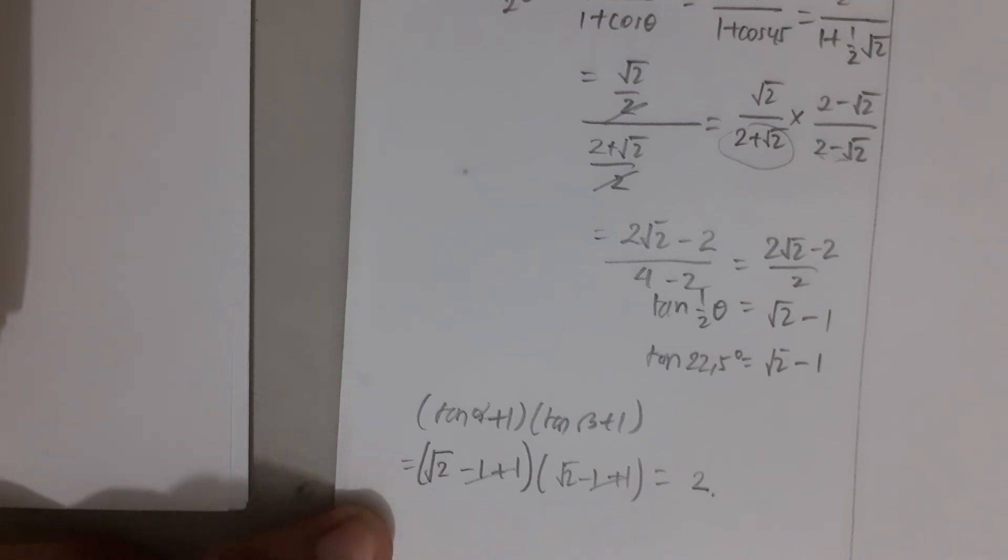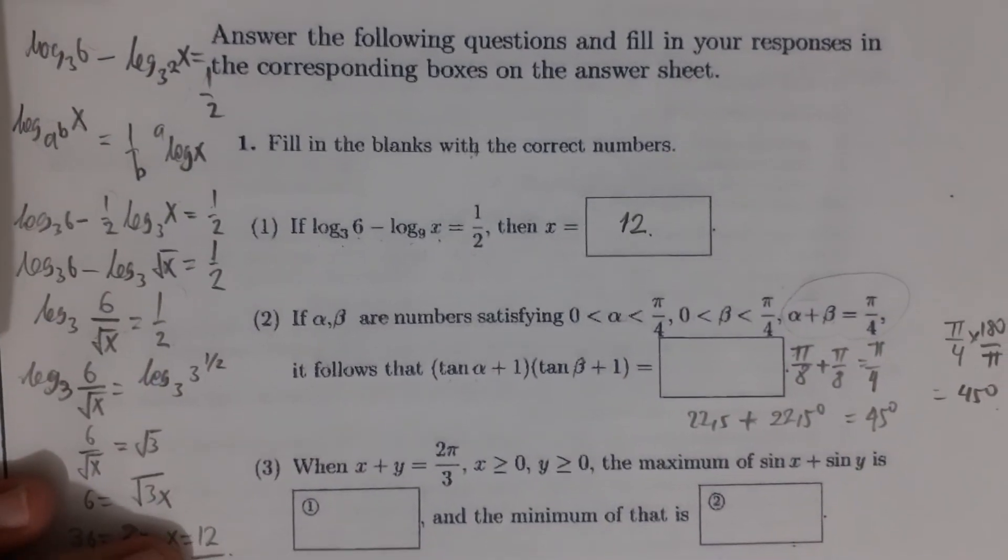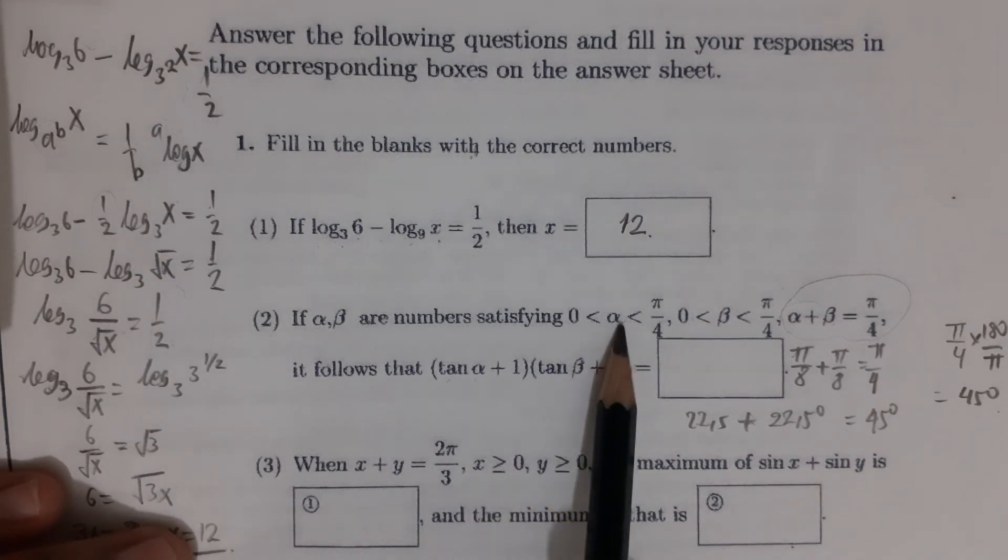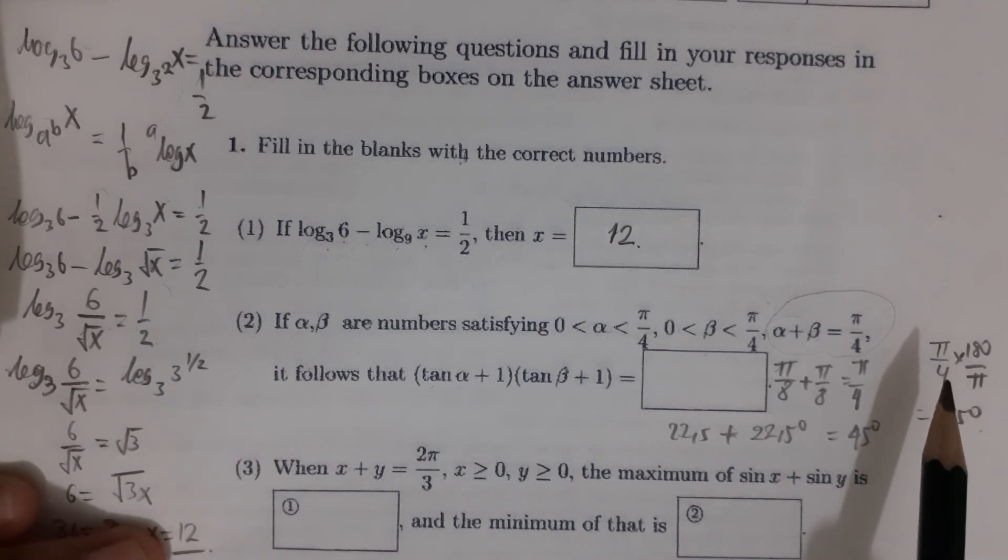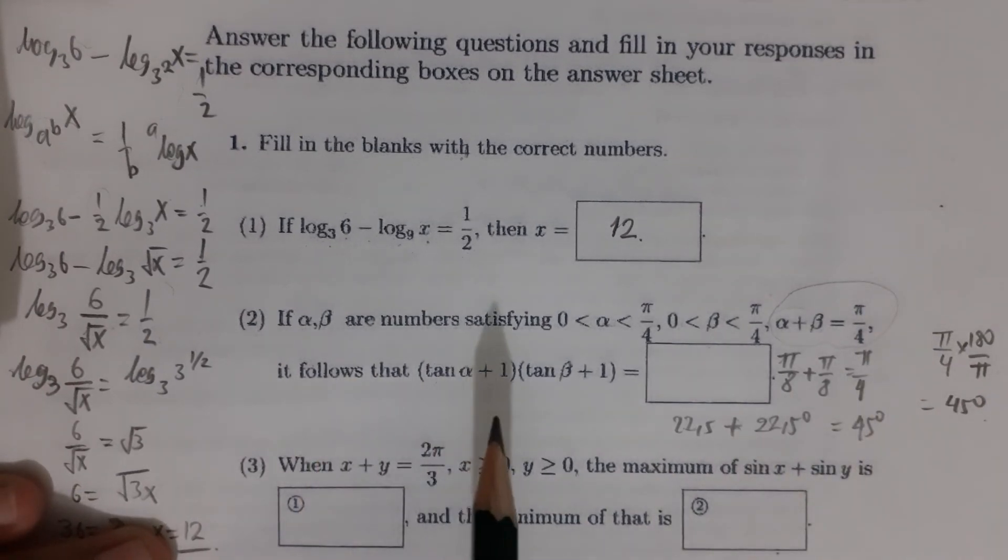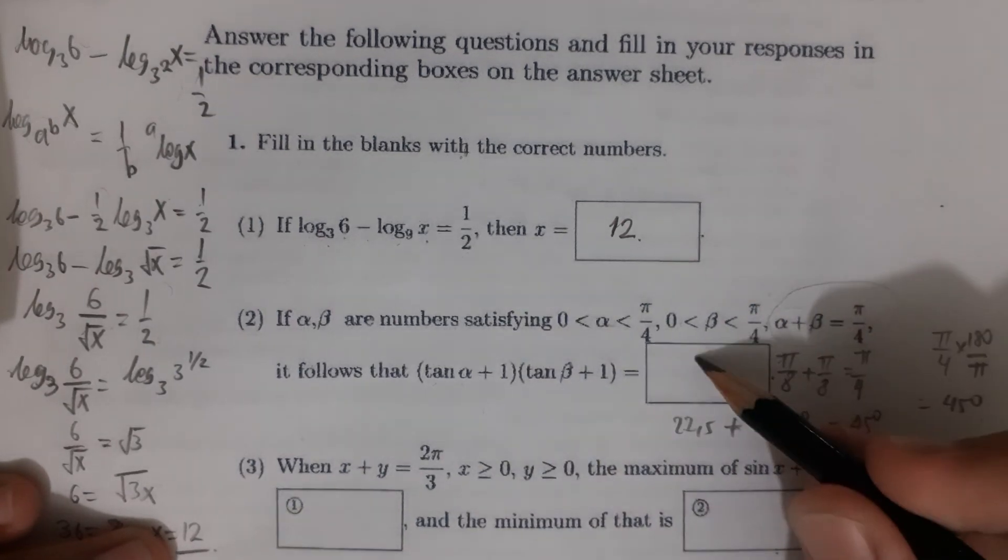So the answer to number 2: if alpha and beta are numbers satisfying the range of alpha and beta, and α + β = π/4, it follows that (tan α + 1)(tan β + 1) equals 2.